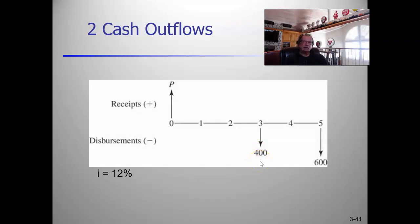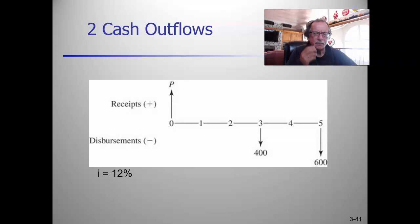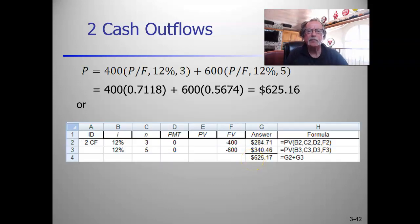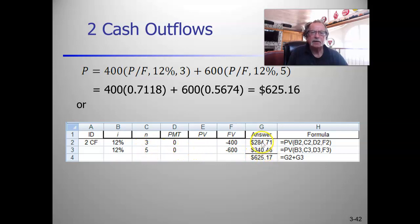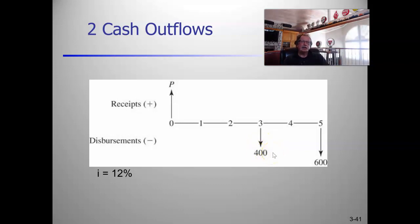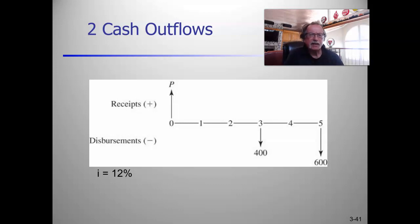When you have two cash outflows, it's exactly the same — you just sum them up. For example, if the interest rate is 12%, you do a calculation for $400 at three periods and $60 at five periods and sum them up. This is really important because in the last video we had $30,000 and $10,000 annually of savings and $2,000 annually of O&M — to analyze the project we have to be able to sum them up.